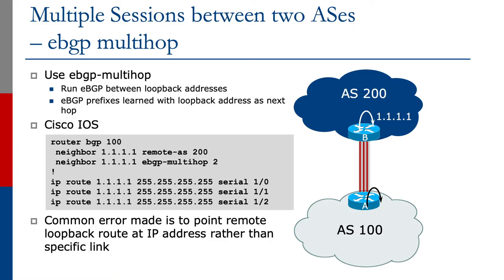eBGP multi-hop has become quite widely used on the internet today for handling BGP sessions between two ASs when there are more than a single link between the two autonomous systems, or even if there's some intermediate Layer 3 device between the two autonomous systems.